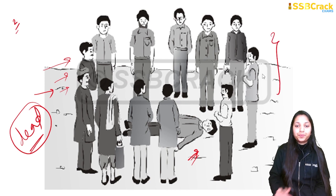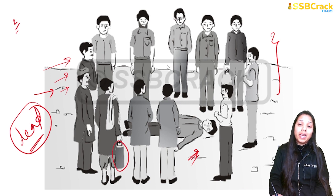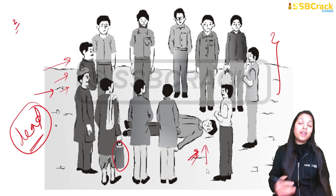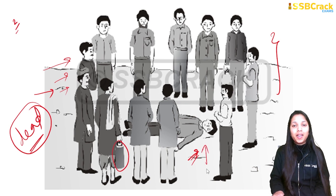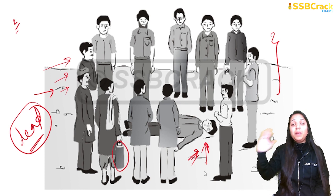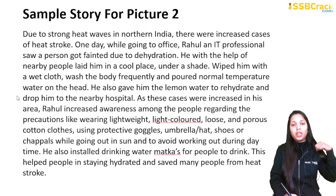We can also see that this person has a tiffin box with him and everybody is in formal attire, meaning people are going to work. While going they saw somebody who fainted. You can assume someone fainted from heat, or assume a factory scene where someone fainted — but don't go to the extreme of assuming he died. Keep your interpretation measured.